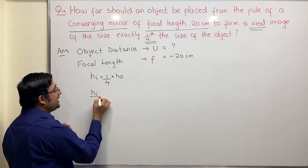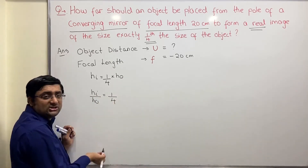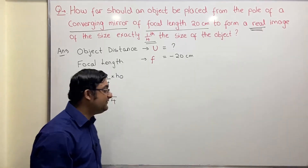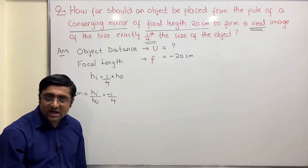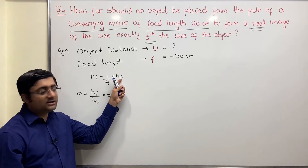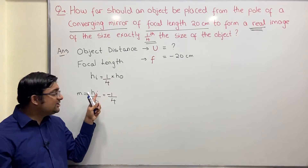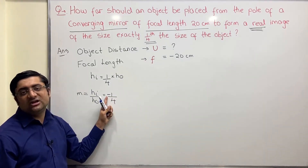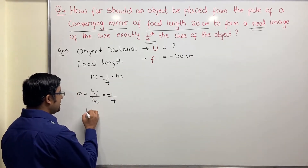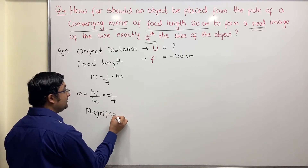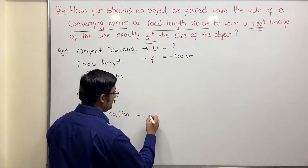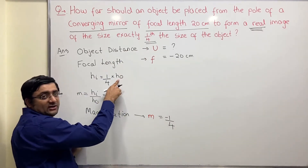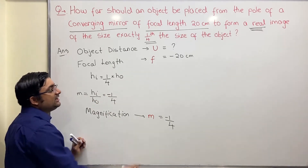So hi by ho is one by four. What is hi by ho? It is basically magnification. Now be very careful — we want a real image, so magnification will be negative. The ratio hi by ho is one by four, which is magnification, but because a real image is formed, magnification is negative. So m = minus one by four.